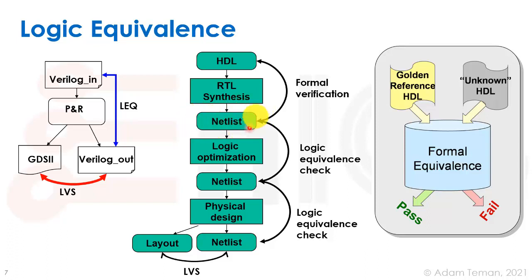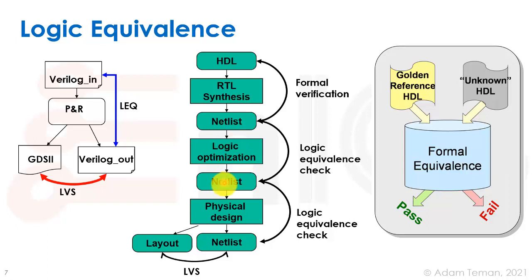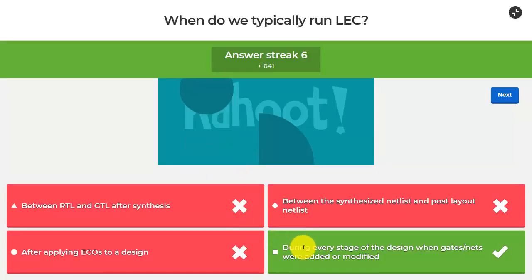Right after synthesis, we run logic equivalence check while we still know which constructs were adders at both levels. Once the netlist becomes our golden reference, we should run LEC again at every stage where we modify the netlist — logic optimization, ECO insertion, and so on. Ultimately, we need a check from the start of place-and-route to the end. The correct answer is: during every stage of the design when gates or nets were added or modified.